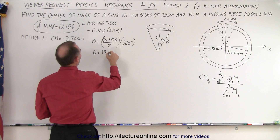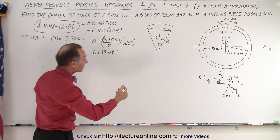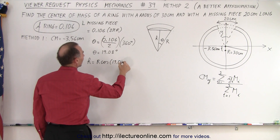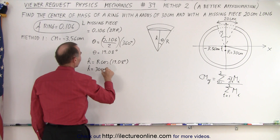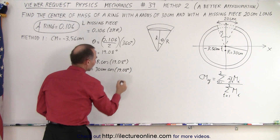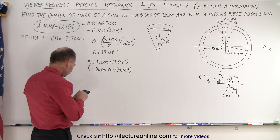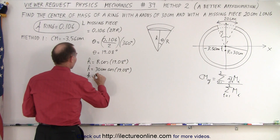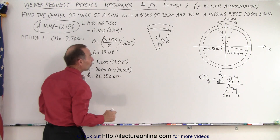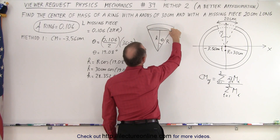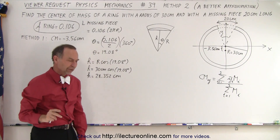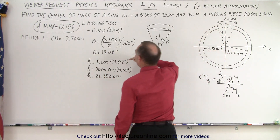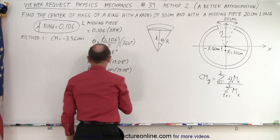So we have 0.106 divided by 2 times 360, and we get 19.08 degrees. So theta is equal to 19.08 degrees. Now the next thing we're going to do is calculate H. H is equal to the hypotenuse R times the cosine of 19.08 degrees. So H equals 30 centimeters times cosine of 19.08 degrees, which gives us 28.352 centimeters. That means the distance to the bottom edge of the ring on either side is only 28.352 centimeters. Obviously not the whole missing piece is that low.